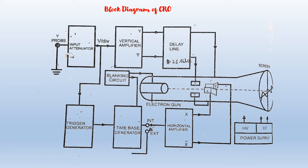Let us begin with the explanation of each and every block of CRO. Input Attenuator and Vertical Amplifier: Usually the input signal does not have sufficient magnitude to move the beam vertically over the screen. In order to amplify the signal to a desired value, a vertical amplifier is required. This amplified signal is applied to the vertical plates. The gain of this amplifier can be controlled by the volts-per-division knob. The output of this amplifier is applied to the delay line.